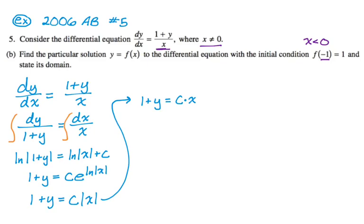I'm going to use the initial condition. So 1+1 equals c times negative 1, so I know that c is negative 2. And that means that my solution is y equals -2x minus 1, but I have to make note again of this x is less than 0, so my domain is x is less than 0.